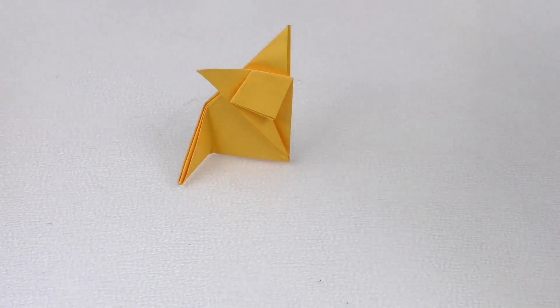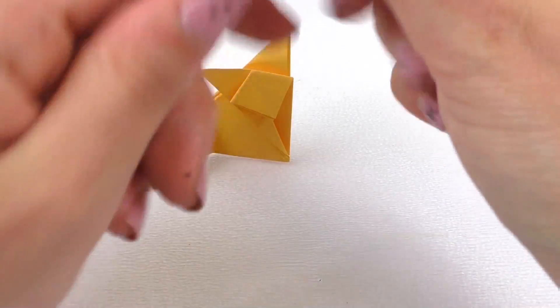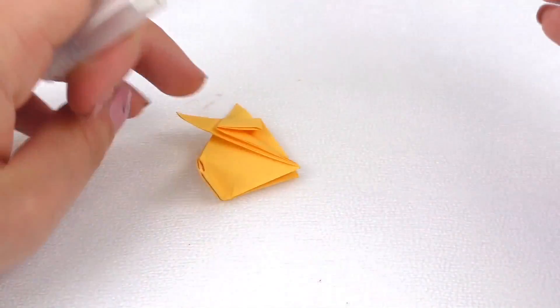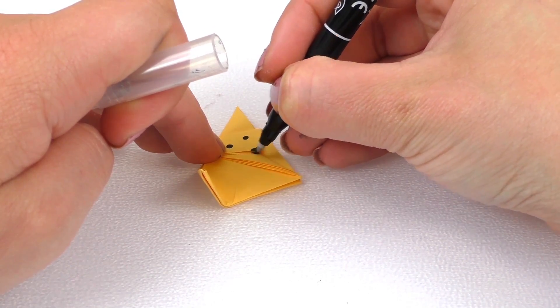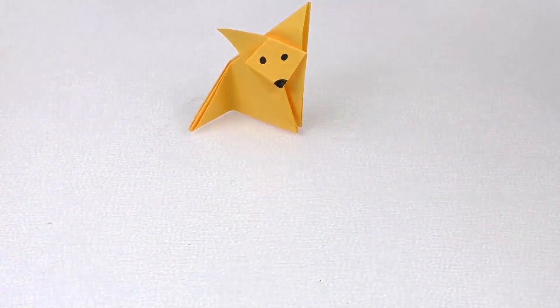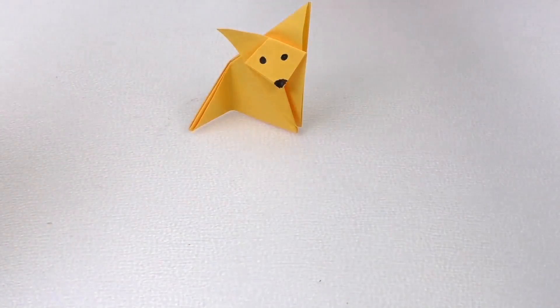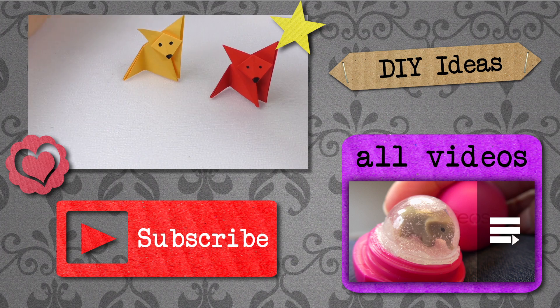Of course we're missing the eyes. We're going to grab our marker and draw them. And there we go. Now our fox is ready. We have the face and we have the body.